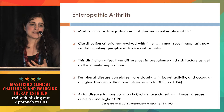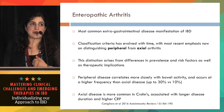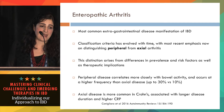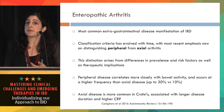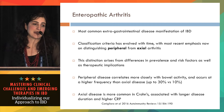Peripheral disease correlates more closely with bowel activity, particularly in UC — hence we often ask the gastroenterologist whether the disease is well controlled when we see a peripheral arthritis flare. It's certainly more common: up to a third of patients probably have some type of peripheral inflammatory arthritis, compared to 10% or less who have axial disease.